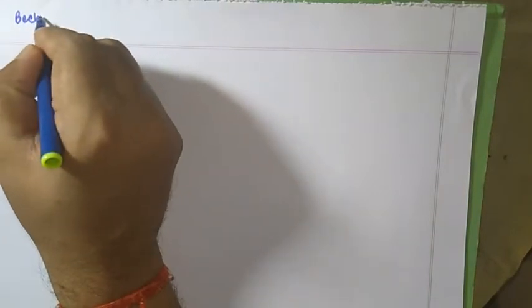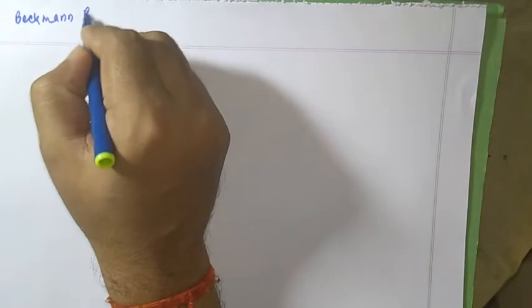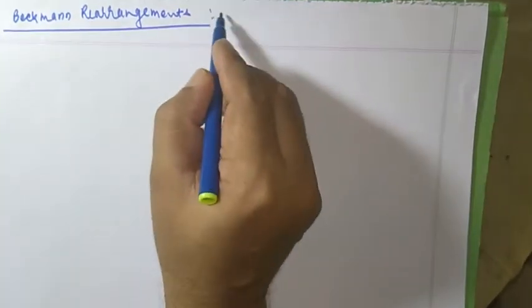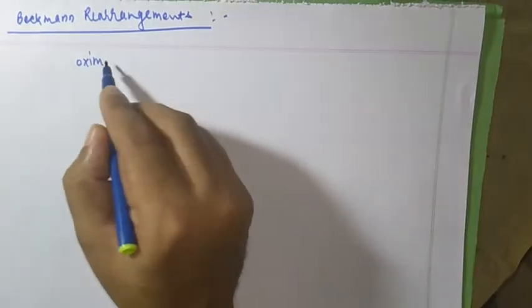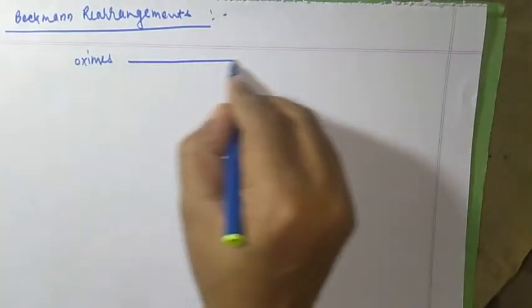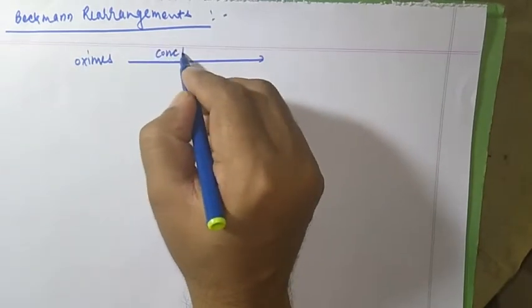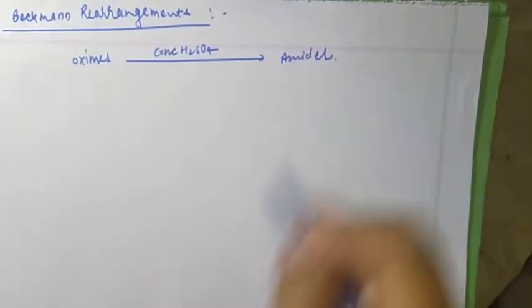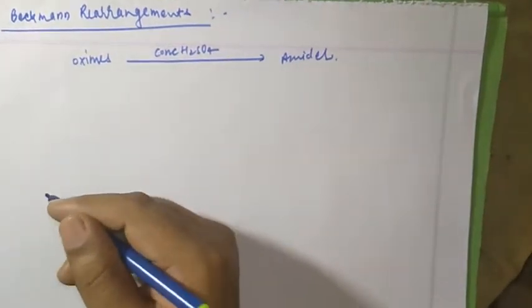Hello friends, today I'm going to explain examples of Beckman rearrangement. Application-based examples are very important for understanding Beckman rearrangement. In Beckman rearrangement, oximes are treated with a mineral acid such as concentrated H2SO4, giving amides. We have to explain that rearrangement with the help of examples.